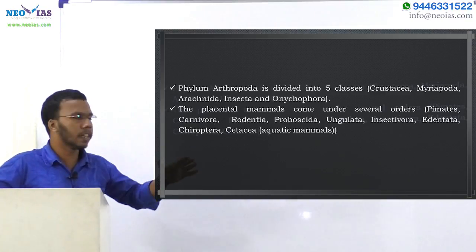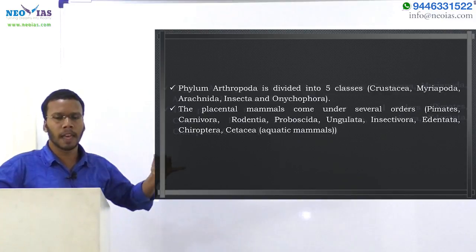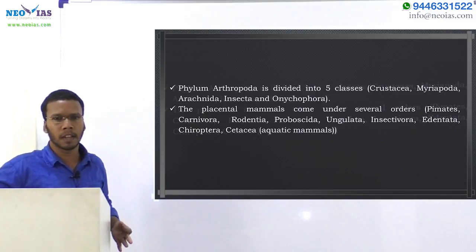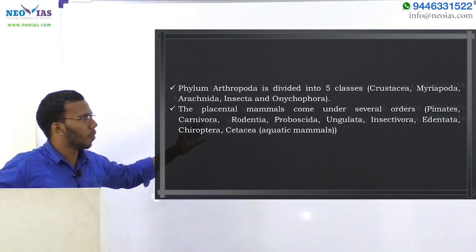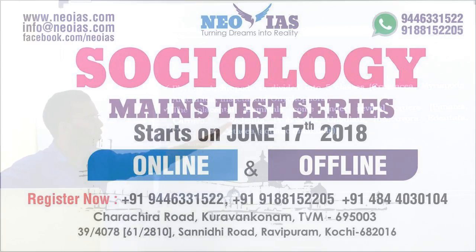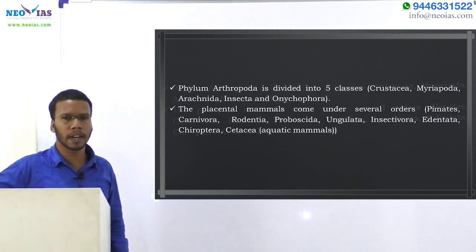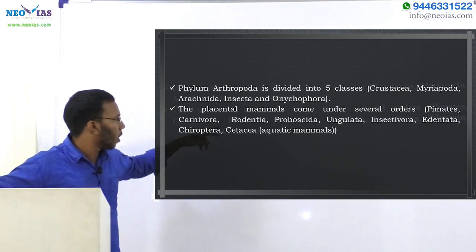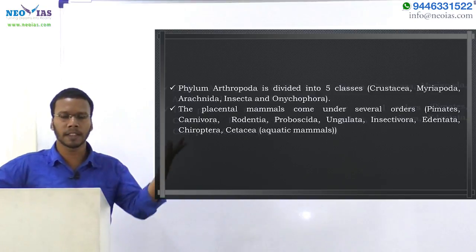Regarding mammals, they are divided into pouched mammals, egg-laying mammals, and placental mammals. Under placental mammals, there are several orders: Primates, Carnivora, Rodentia, Proboscida, Ungulata, Insectivora, Edentata, Chiroptera, and Cetacea. Cetacea means aquatic mammals like dolphins, whales, and dugongs.